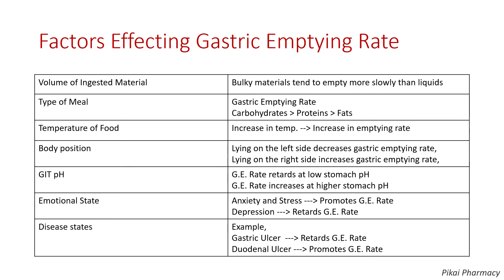Fifth, gastrointestinal pH — at low stomach pH the gastric emptying rate decreases, and at higher stomach pH the gastric emptying rate increases. Sixth, emotional state — anxiety and stress promote the gastric emptying rate, whereas depression retards it. Lastly, disease status — for example, gastric ulcer causes retardation (a decrease) in the gastric emptying rate, while duodenal ulcer shows an increase in the gastric emptying rate.